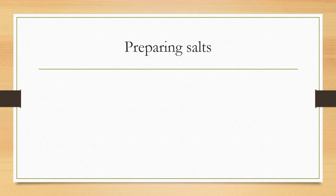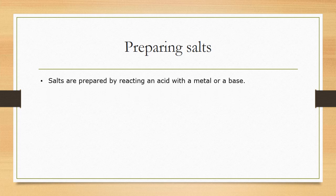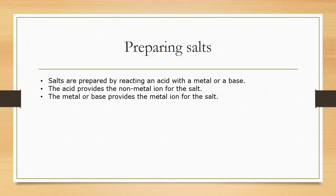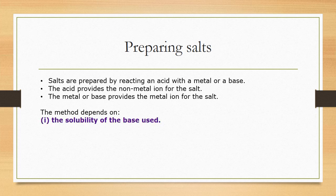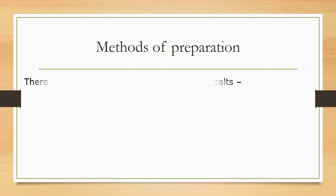Next, you need to be able to work out how to prepare salts given a certain acid or base. Some salts will be insoluble, some soluble. Salts are prepared by reacting an acid with a metal or alkali. The acid provides the non-metal ion for the salt, and the metal or base provides the metal ion. The method depends on the solubility of the base being used and the solubility of the salt to be made. All acids are aqueous solutions.